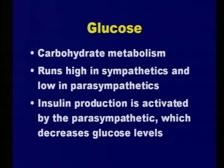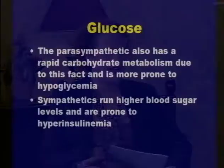With glucose, insulin production is activated by the parasympathetic, which decreases glucose levels. The parasympathetic also stimulates pancreatic secretions including insulin. Parasympathetics have rapid carbohydrate metabolism and are more prone to hypoglycemia because of this—they really should avoid refined foods and refined sugars, as their blood sugar tends to bottom out causing that dizzy, shaky feeling. Sympathetics run higher and are more prone to hyperinsulinemia or syndrome X—type 2 diabetes—so sympathetics have to pay closer attention to their glucose levels.